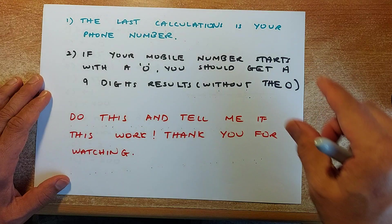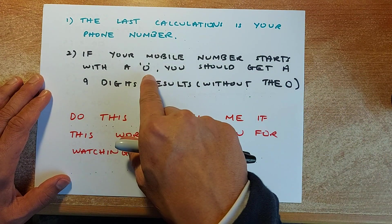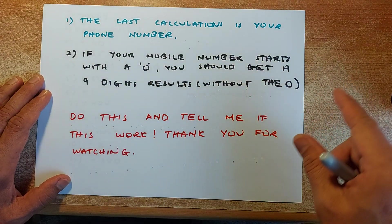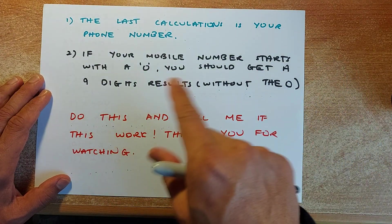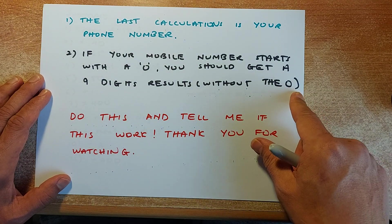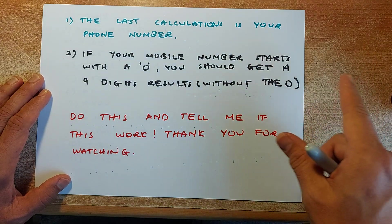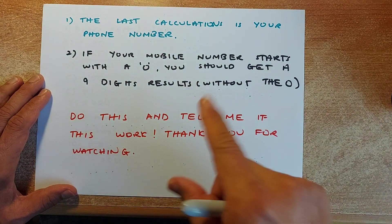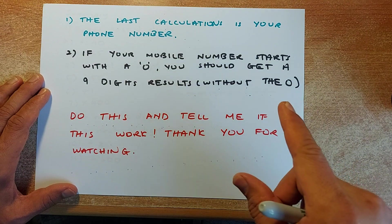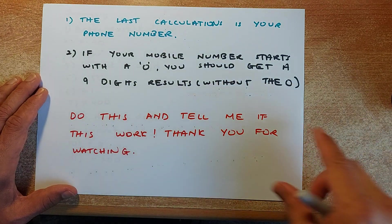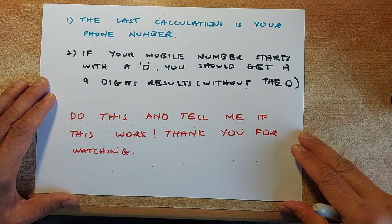If your mobile starts with a 0, like 021, the 0 will not appear — so you will only have a 9-digit number. If you have an 8-digit number, the first two zeros will not appear. Do this and tell me if that works.